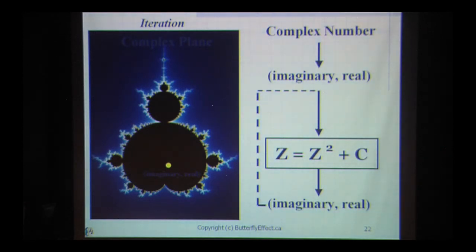So a complex number is an imaginary number together with a real number. Put simply, the Mandelbrot set image is generated by iterating points from the complex plane, the set of all complex numbers, through the function z equals z squared plus c.